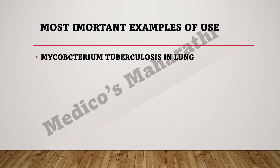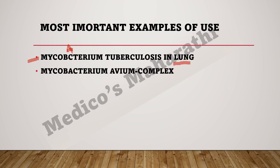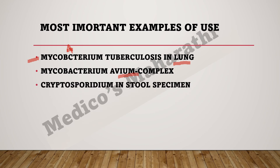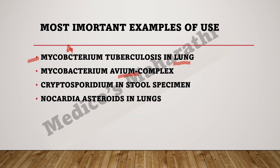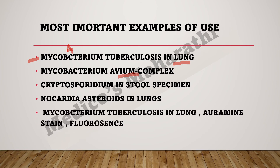The most important examples of where we use Ziehl-Neelsen stain are: Mycobacterium tuberculosis in the lung, Mycobacterium avium complex, Cryptosporidium in stool specimen, and Nocardia asteroides in the lungs. Mycobacterium tuberculosis in the lung can also be stained using other stains.